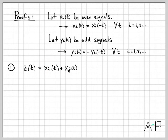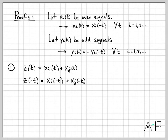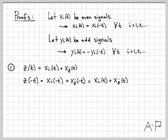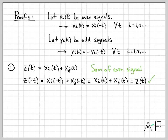The first thing we want to do is add together two even signals: z(t) = xi(t) + xj(t). Is z an even or odd signal? Let's check by computing z(-t), which gives xi(-t) + xj(-t). But since xi and xj are both even, that equals xi(t) + xj(t), which is z(t). So z(t) = z(-t), meaning this is indeed an even signal — a sum of even signals is even.